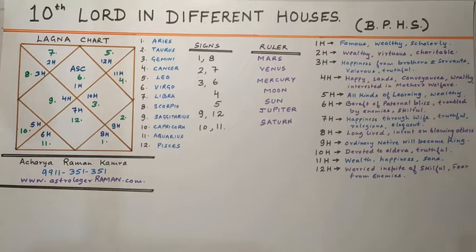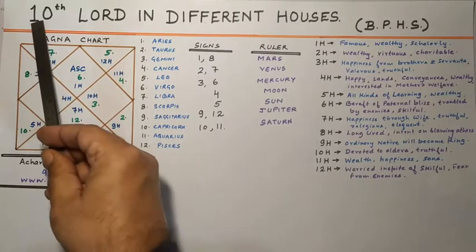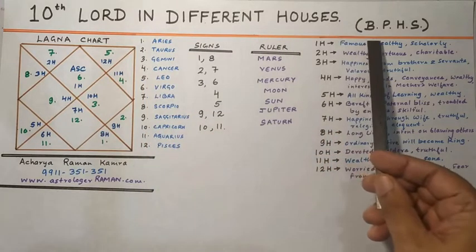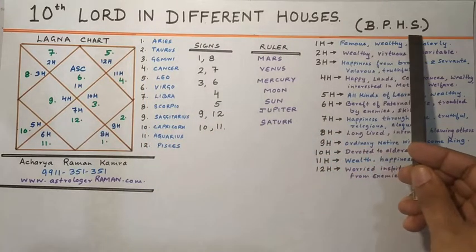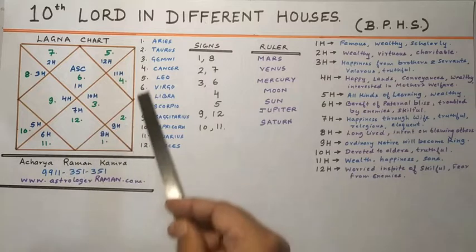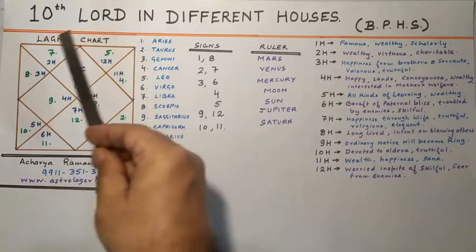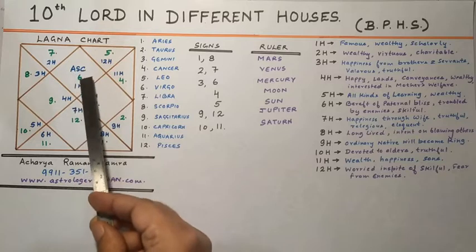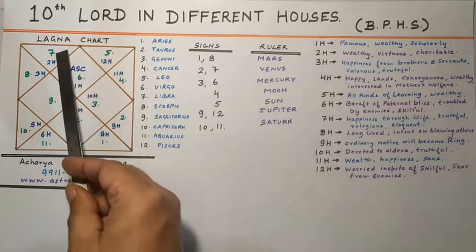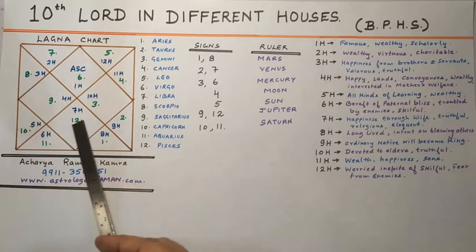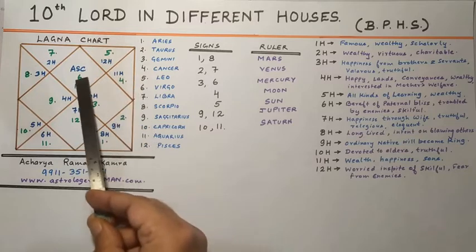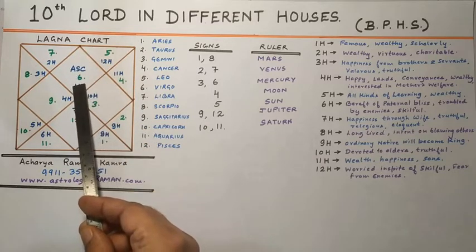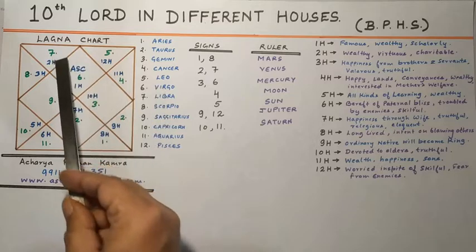So friends, let us start our topic — the next in the series. This is the result of the 10th Lord in Different Houses according to Brihat Parashara Hora Shastra. As you can see in the Lagna chart or main birth chart here, the first house always remains where Ascendant is written. The number written here can change because these are Rashis or signs, but the first house always remains where Ascendant is written. Here, the 6th number stands for Virgo.